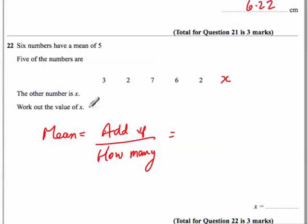If we do that, to add them up: 3 plus 2 is 5, 5 plus 7 is 12, plus 6 is 18, plus 2 is 20. So we've got 20 plus x, and now we divide by how many there are. There are 6: 1, 2, 3, 4, 5, 6.